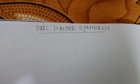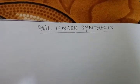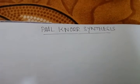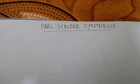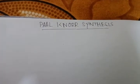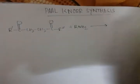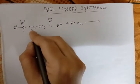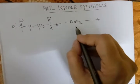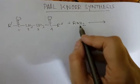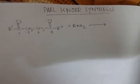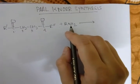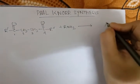Hi friends, this video is about Paal-Knorr synthesis. Paal-Knorr synthesis is a process to synthesize pyrrole derivatives from 1,4-diketone compounds. Here the 1,4-diketone compound (positions 1, 2, 3, 4) reacts with ammonia or primary amine compound and gives pyrrole derivative.